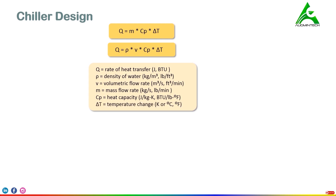Cp is heat capacity, measured in joules per kg kelvin or BTU per pound degree Fahrenheit. Delta T is the temperature change. The SI unit of temperature is kelvin, but since this is a change of temperature, either kelvin or centigrade can be used in the SI system. In the IP system, degree Fahrenheit is used. Wherever only temperature is mentioned, always use kelvin; wherever change of temperature is involved, either kelvin or degree centigrade can be used — the results won't be affected.